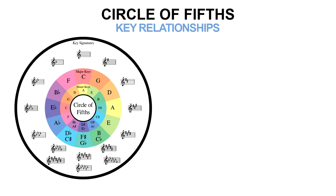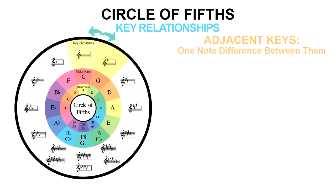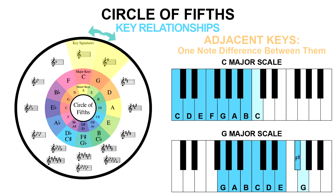Now that you know how the keys are arranged around the circle, let's talk about how they all relate to each other. Scales that are a fifth apart are only one note different from each other, which is why the keys work so well together. C to G major is a fifth up. The C major scale is C, D, E, F, G, A, B — versus the G major scale: G, A, B, C, D, E, F sharp, G. They share all the same notes except for one difference: F in C major and F sharp in G major. That's why they're likely to transition well when mixing songs in those keys.